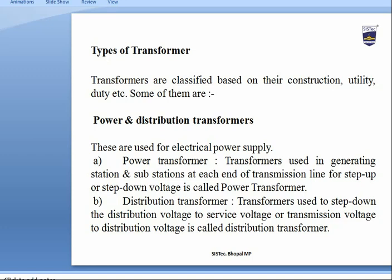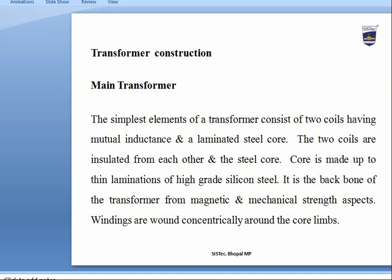Instrument transformers are used for measurement, control, and protection purposes. These include PT (potential transformer), used for voltage measurement, and CT (current transformer), used for measuring current.